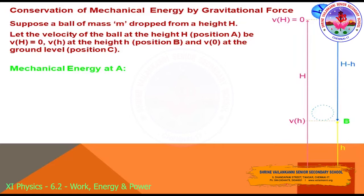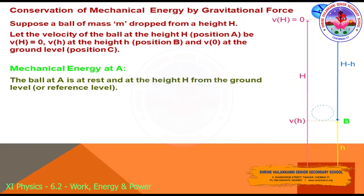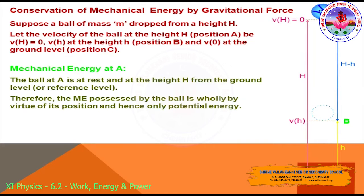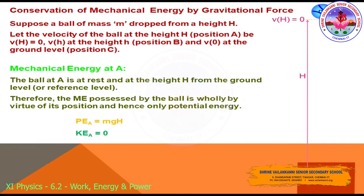At position A, the ball is at height H above the ground. The mechanical energy is wholly by virtue of its position, so only potential energy is present. The potential energy at A equals mgh, and the kinetic energy at A equals zero. Therefore, the total mechanical energy at A, EA = PE + KE = mgh + 0 = mgh.